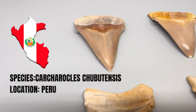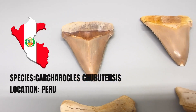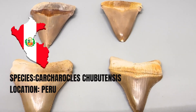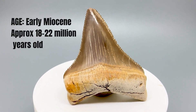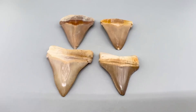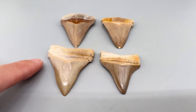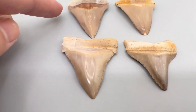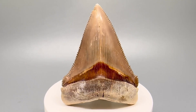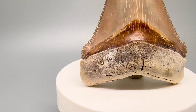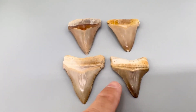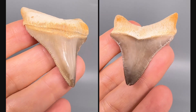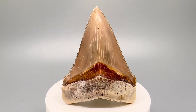These teeth here are all from Peru. These are some of the earliest examples we have of Chubutensis, between 18 and 20 million years old on average. You can see that some will have nice cusps here, looking almost like Angustidens, some have more cusps more like a Chubutensis, and some don't even really have cusps at all. But they're all the same species, all the same location and age. There's just a lot of variety in these teeth.